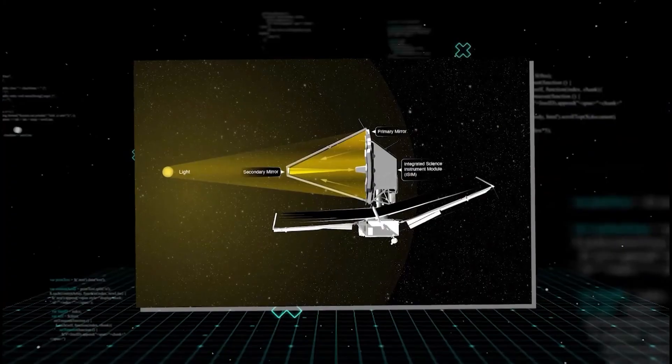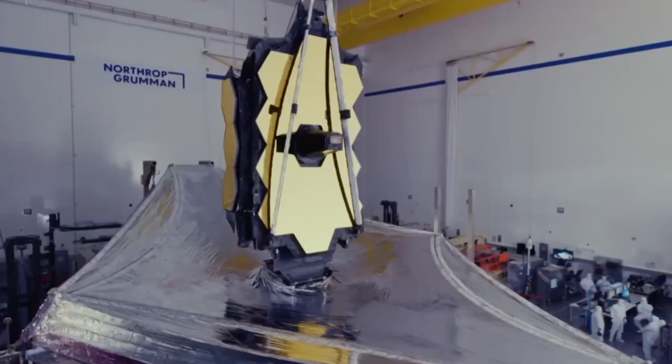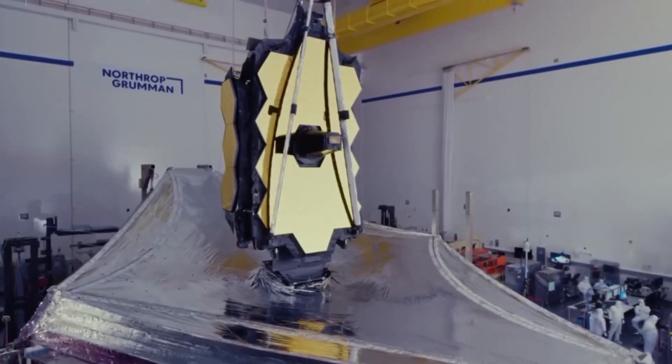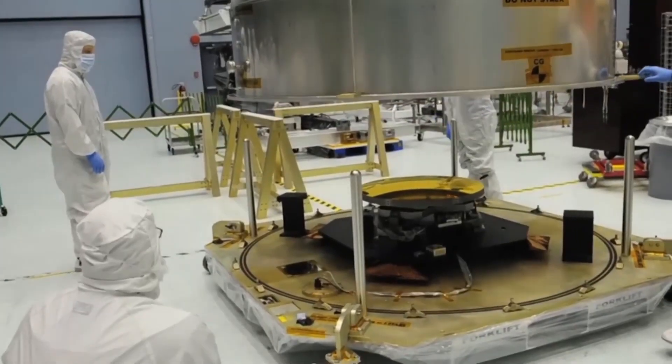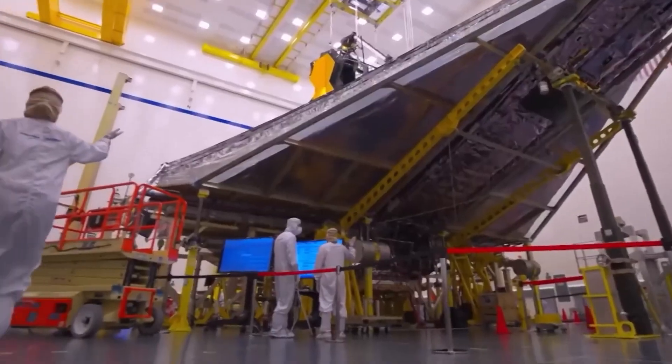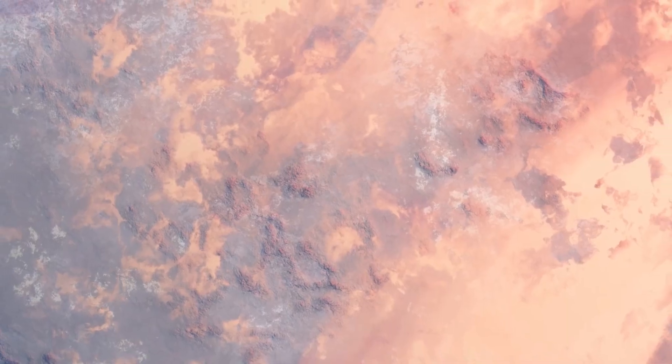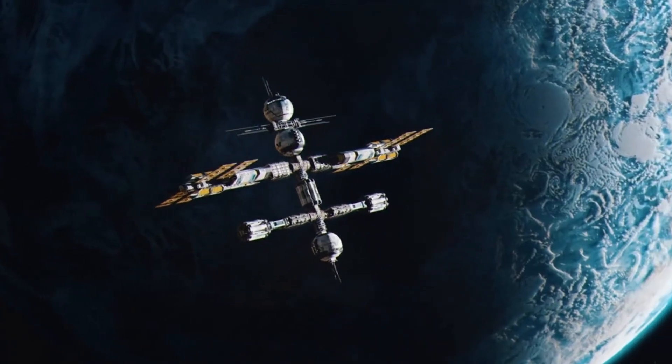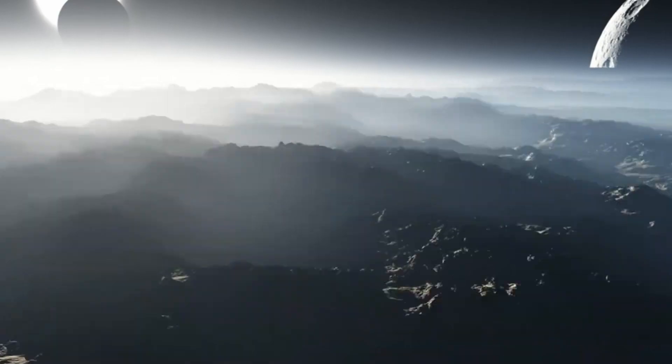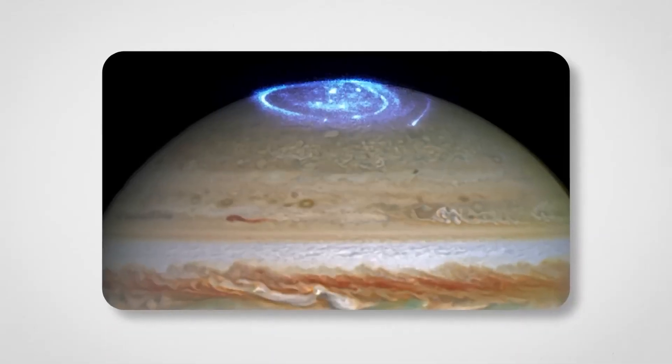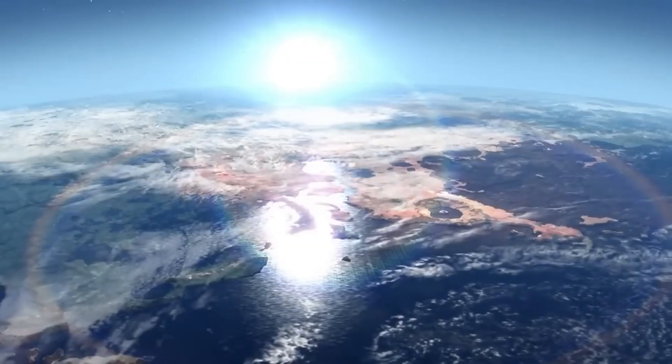The materials used in the telescope's construction were just as critical. The primary mirror segments are made of a special gold-coated beryllium material. Gold was chosen because it reflects infrared light more efficiently than other materials, making it ideal for the telescope's infrared observations. Beryllium is lightweight, strong, and stable across a wide range of temperatures, important for a telescope operating in the extreme cold of space.